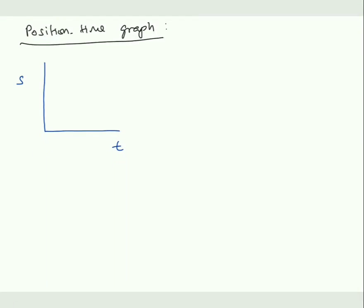Dear students, in this graph we are going to discuss position time graph. Here I drew a position time graph and I get a straight line. The slope of position time graph represents velocity.